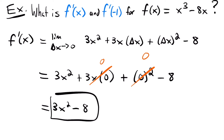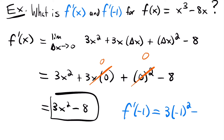We also need to find the derivative at x equals negative 1. We plug in: f prime of negative 1 equals 3 times (negative 1) squared minus 8. Negative 1 squared is 1, so we get 3 times 1 minus 8, which equals negative 5.